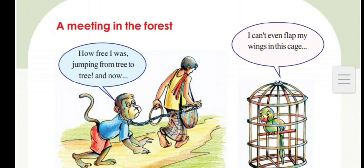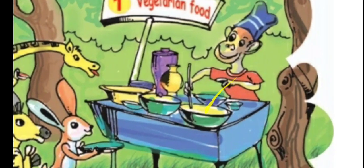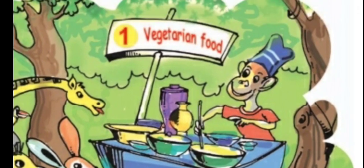Then we have different animals coming. In this meeting, we have two counters — counter one and counter two. They are distributing food, like food for animals. What is counter one? Vegetarian food.